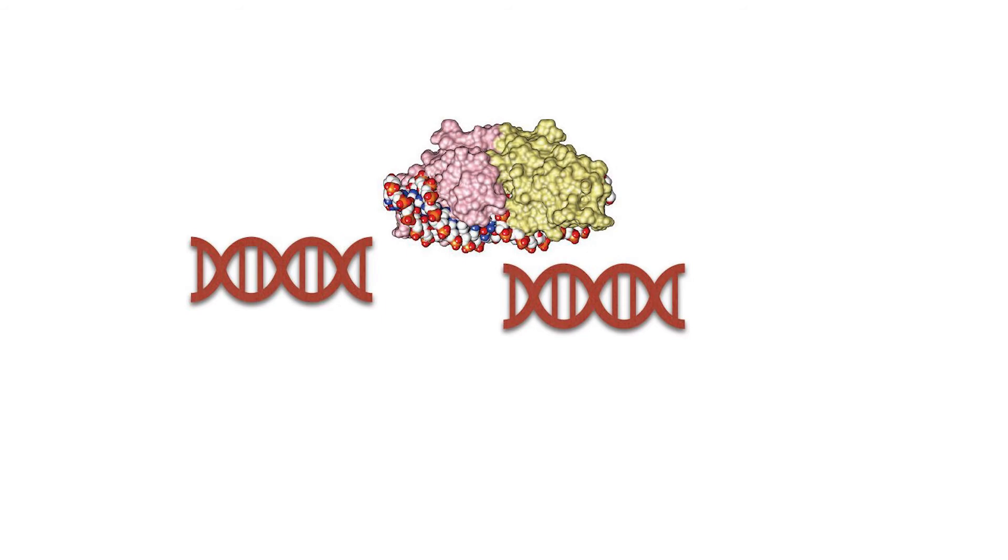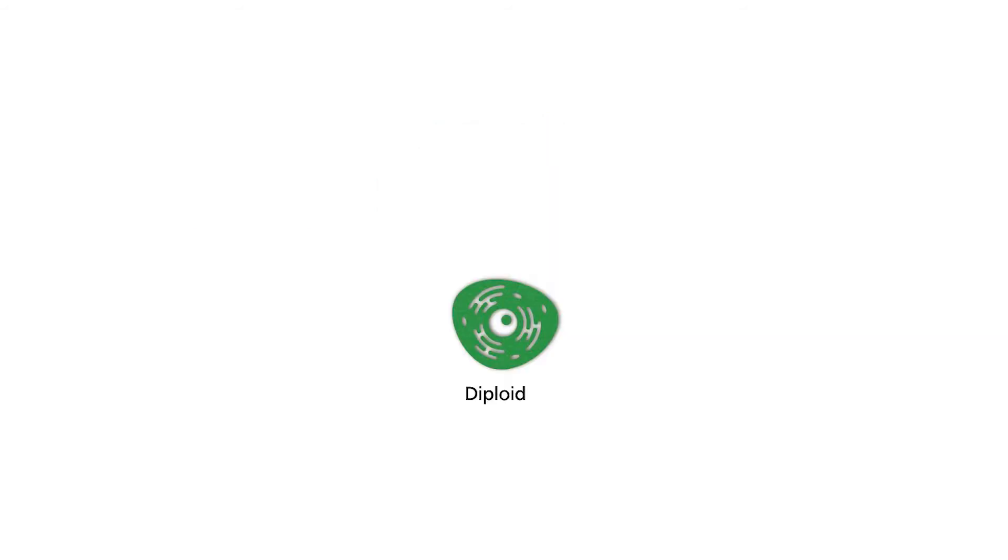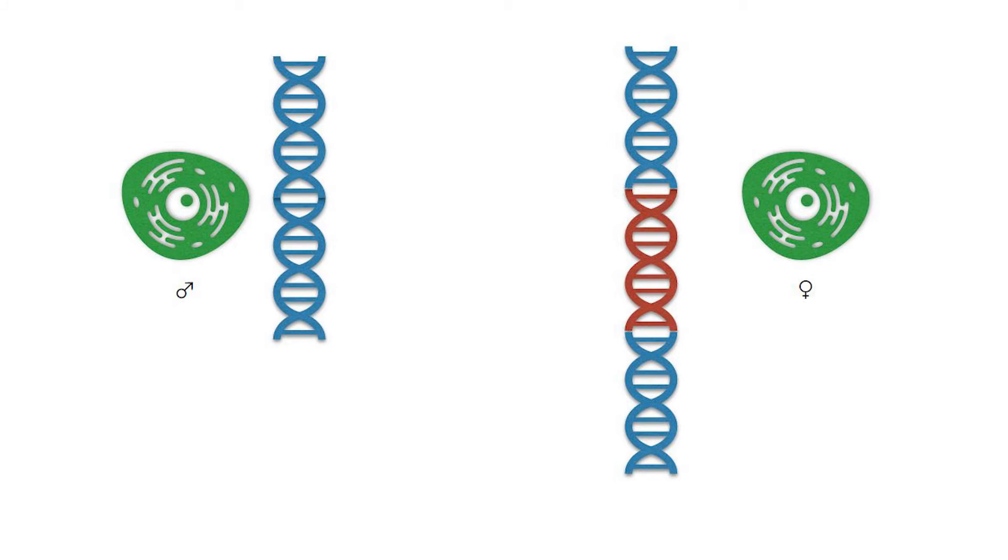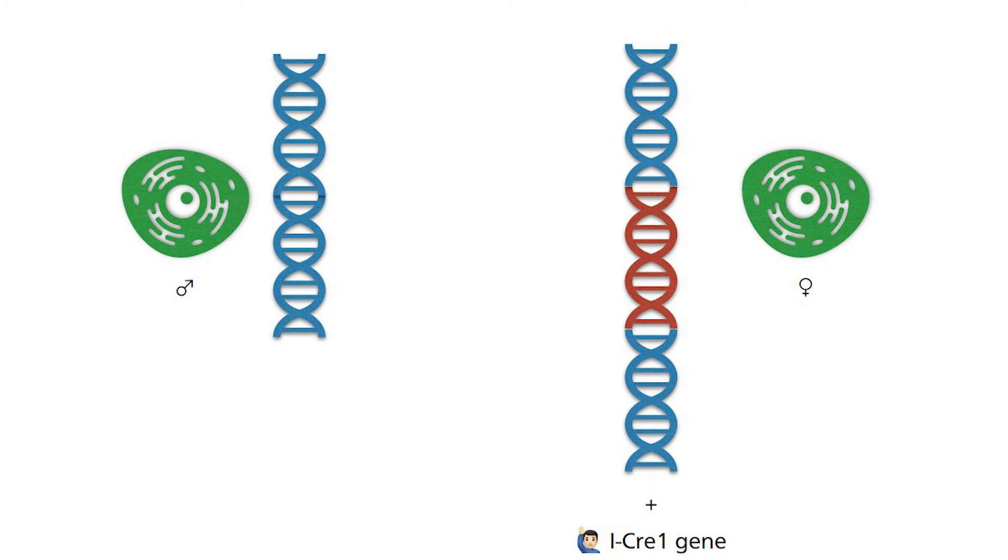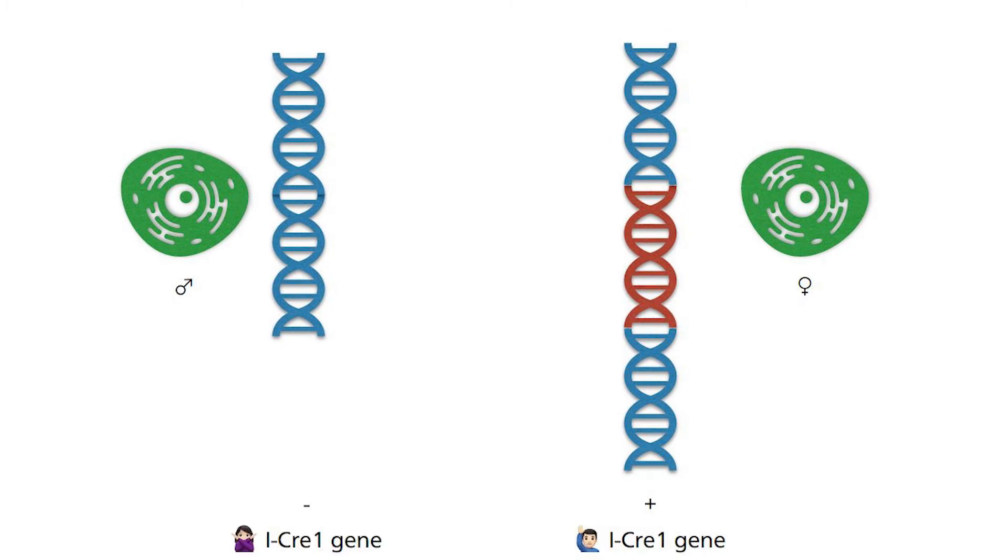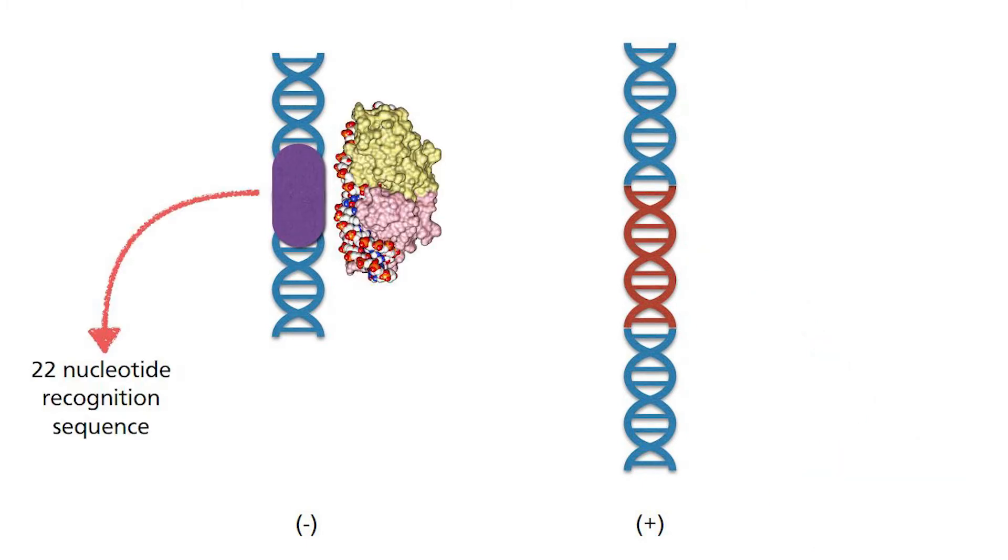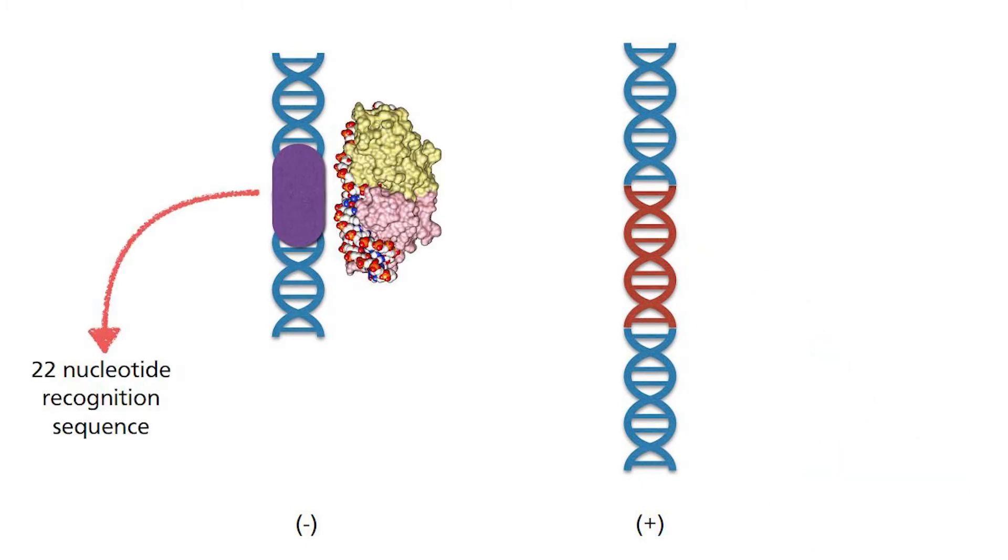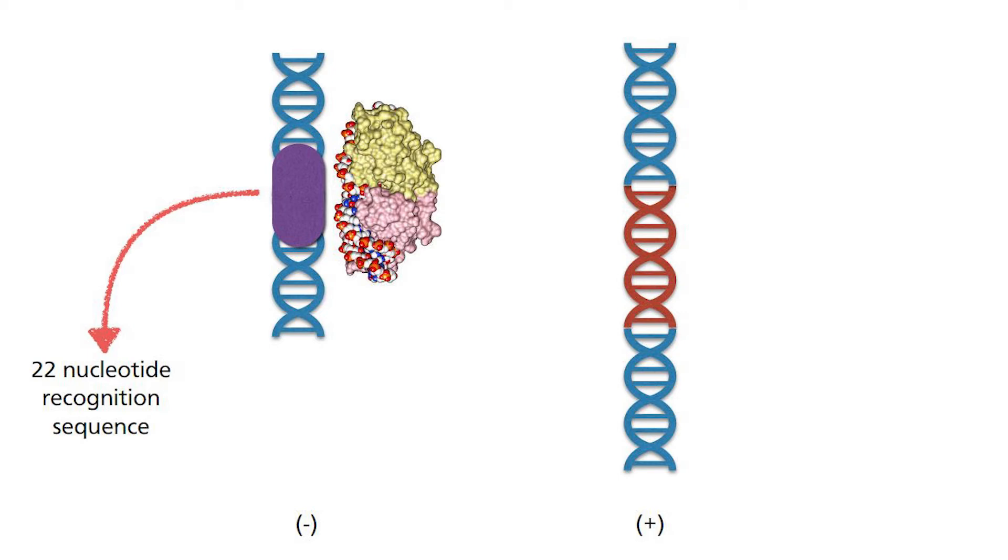Before I continue, green algae are diploid organisms where they inherit one copy from each parent. So, let me describe this scenario. If one copy of the parent's rRNA gene contains iCree-1 gene, and let's call it the plus copy, and the other do not, and we call it the minus copy. In this case, the iCree-1 gene, when expressed, creates the enzyme which recognizes the 22 nucleotides on the minus copy. Since the plus copy has got the iCree-1 gene, the 22 nucleotides are separated. The enzyme will only cut when the 22 nucleotides are together.